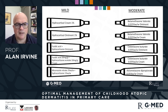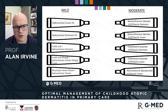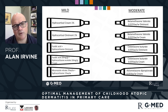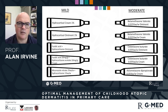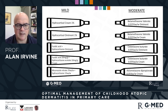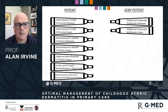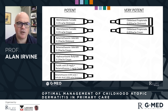I use a photo mnemonic so that patients who may not have English as their first language or who have poor literacy skills can point out exactly what they're using and how much. I ask them how many grams they've used in the last few months or weeks, and I break these down into mild, moderate, potent, and very potent preparations.